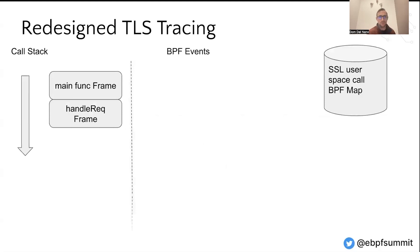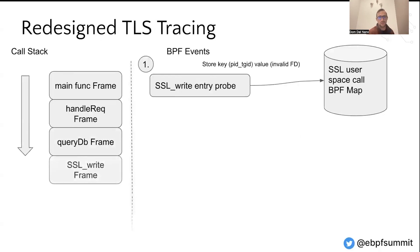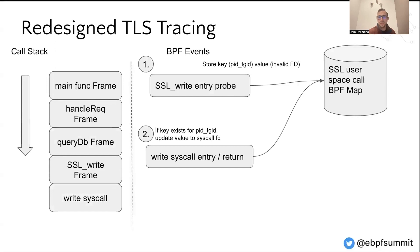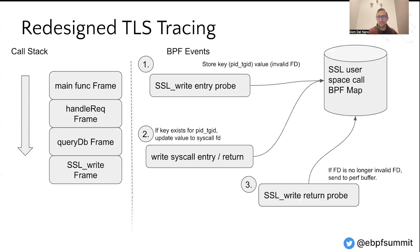Now that we've talked about it at a high level, I want to walk you through how the tracing works and the BPF probes that occur. Imagine we have a service that queries a database over a TLS connection. When the query is sent, SSL write will get called, triggering our first probe, which stores an entry in a BPF map where the key is the current PID TGID and the value is an invalid FD sentinel value. From there, write syscalls will occur, and our second BPF probe checks to see if that PID TGID exists — validating that a user space function is on the stack — and if so, takes its socket FD and updates the BPF map with it. Finally, our SSL write return probe triggers, checks the same PID TGID key, and if it is no longer the sentinel value, sends the socket FD and the plain text to a perf buffer for Pixie's user space component to handle.